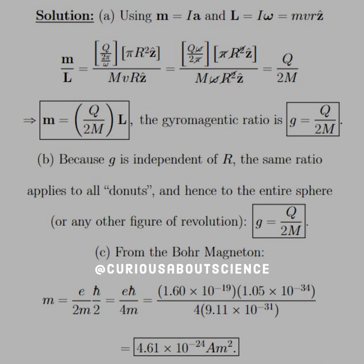All right, fair enough. So the solution: from m = Ia, here I is the current, A is the vector area, L = Iω, which is the rotational inertia times the rotational velocity,